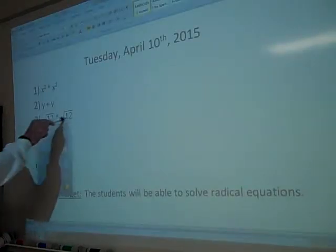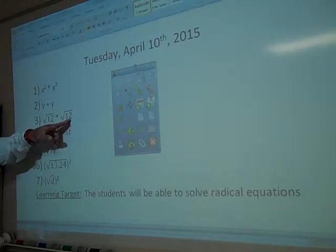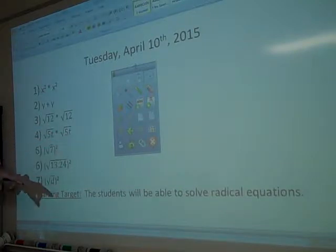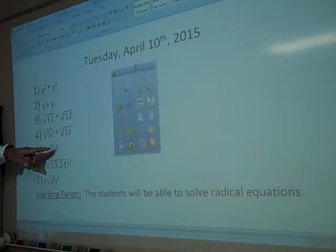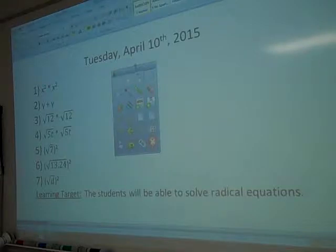On a warm-up, I did this for a reason. Radical 12 times radical 12 is 12. Square root of 5t times square root of 5t is 5t. The quantity of the radical 7 squared is 7. So to get rid of a radical, what do you do? You square it. And in actuality, that's the first lesson that we're going to learn is just square it.